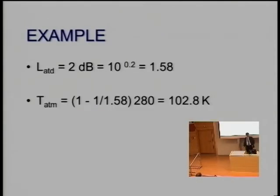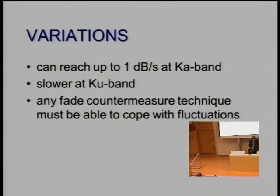Just to give you a hint: 2 dB attenuation through the atmosphere is a factor of 1.58 and translates to additional 102.8 Kelvin of noise. The variations due to the atmosphere at very high frequencies can be very fast - the slope can be 1 dB per second.